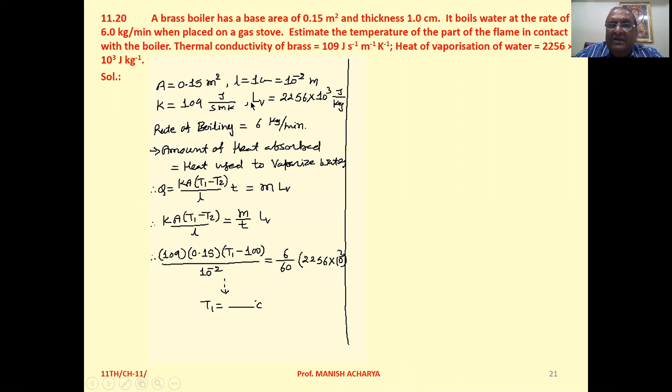K equals 109. Latent heat of vaporization is 2256 × 10³ joules per kilogram, and rate of boiling is 6 kilograms per minute. Now, the amount of heat absorbed, that is the heat used to vaporize water.